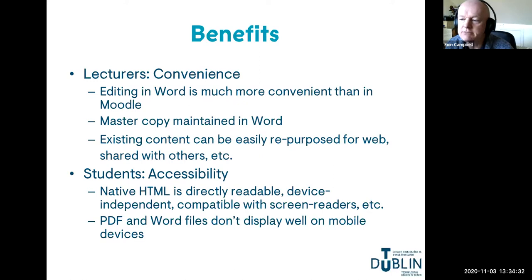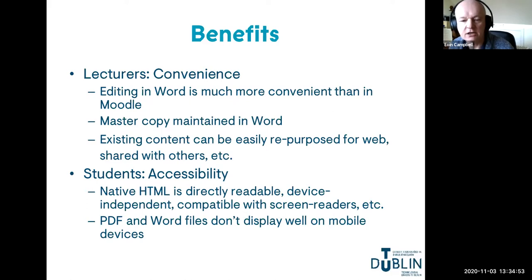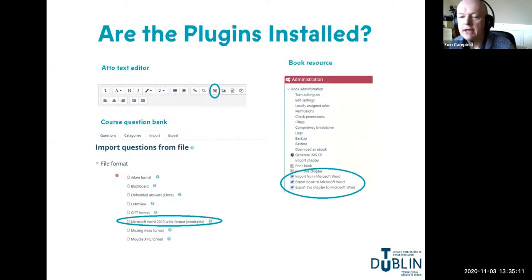From a student perspective, accessibility is the big benefit - native HTML is far superior to Word documents or PDF files for reading on a website. This is particularly true for smaller form-factor mobile devices, as Word and PDF files don't reorganize text to fit the screen - you have to scroll left, right, up and down. With native HTML you get a far superior experience, and it's not just for smaller devices: people with hearing, reading difficulties, or vision impairments can get screen readers to read native HTML much better.